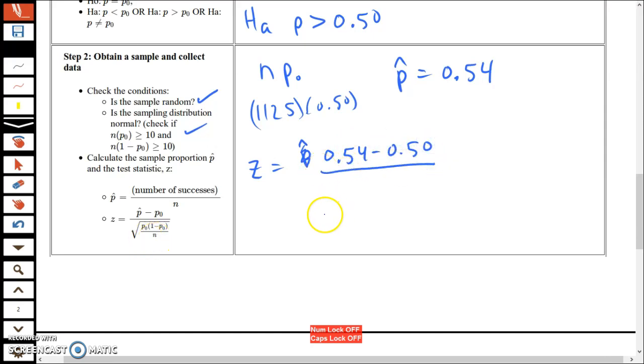Divided by the square root of p from the null hypothesis times (1 - p) from the null hypothesis, which is also 0.50, divided by n, which was 1,125. This denominator is your standard error.